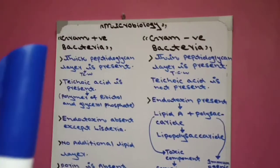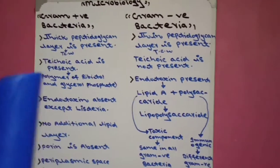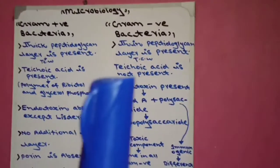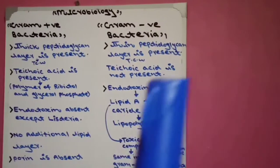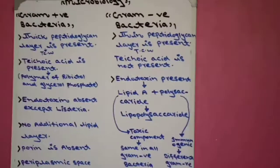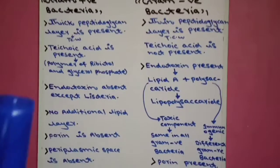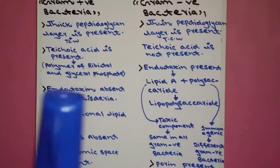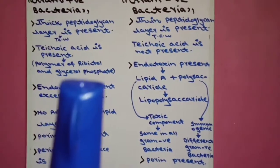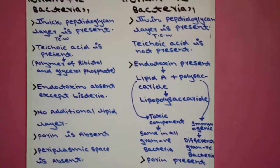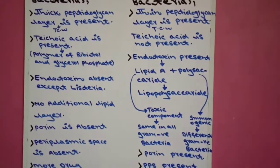The second difference: in gram positive bacteria, teichoic acid is present; in gram negative bacteria, teichoic acid is absent. Teichoic acid is a polymer of ribitol and glycerol phosphate — a polymer of ribitol and glycerol phosphate is called teichoic acid.